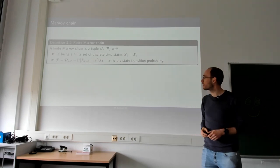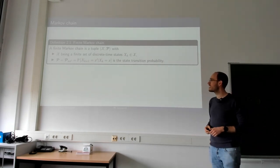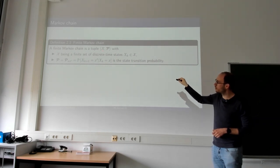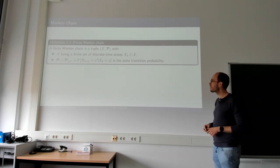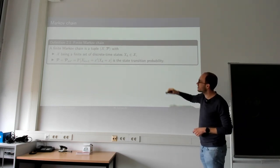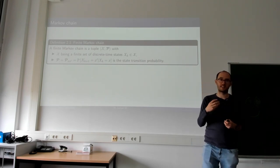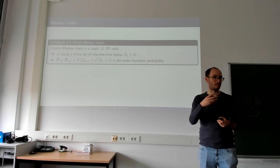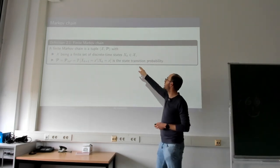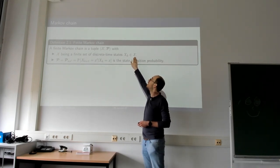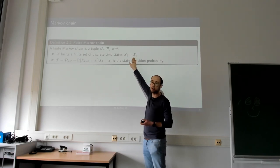So what is the finite Markov chain? The finite Markov chain is comprised of a two-tuple: the state space and a transition probability p. The state space, denoted by curly X, describes how many finite states exist - for example, all different locations on a chess board, or positions on a discretized grid for a car driving example.